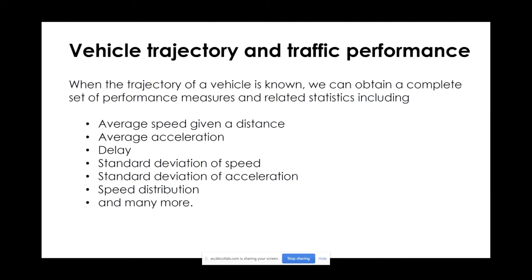Vehicle trajectory data is expensive to collect — either the vehicle must have GPS or we need cameras to capture images and convert them to trajectories. With the increasing penetration of mobile phones it's getting easier. Companies like Google or TomTom follow mobile phones or vehicle GPS to calculate average speed. That's where Google Maps traffic data comes from — it aggregates mobile phone GPS data, combines it with vehicle GPS data, calculates average speed on every street over time, and displays it as green or red on the map.